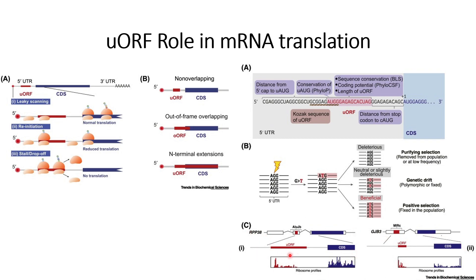The upstream open reading frame can originate from transposable elements or from exons of some proteins. One example shows a uORF derived from exon 2 of HELJB, and a ribosome profiling dataset obtained from bioinformatic data is shown. Another example shows a uORF derived from exon 2 of MIRC. In both cases, ribosome-protected fragments are shown — in red for the uORF region and in blue for the coding sequence.